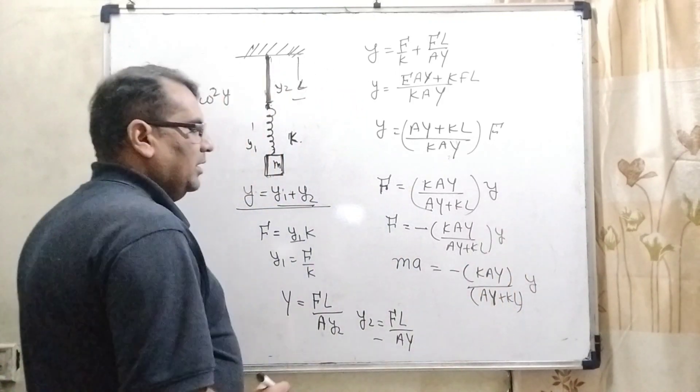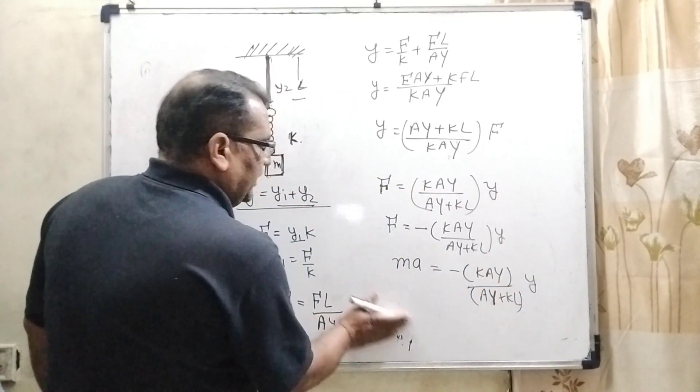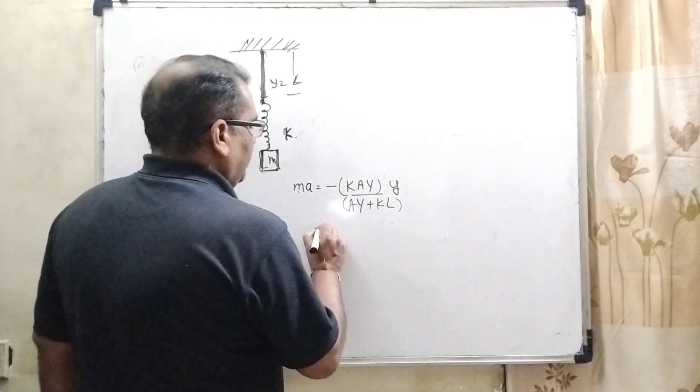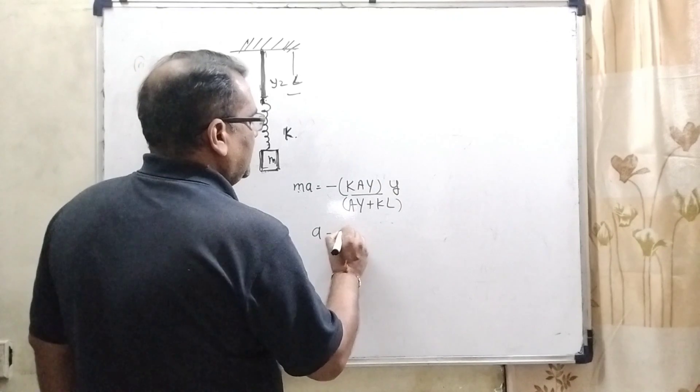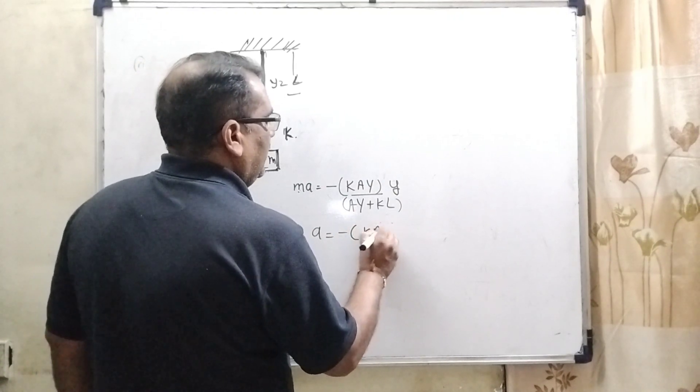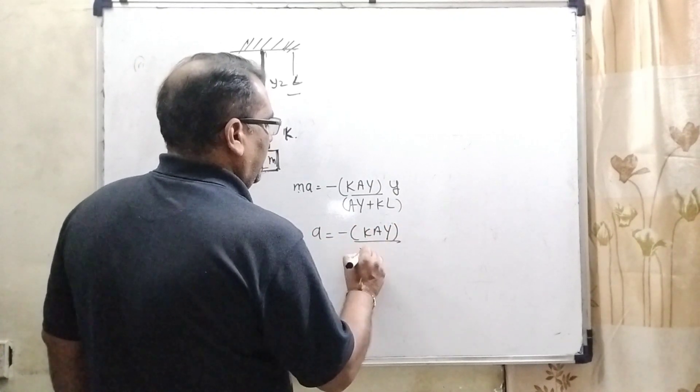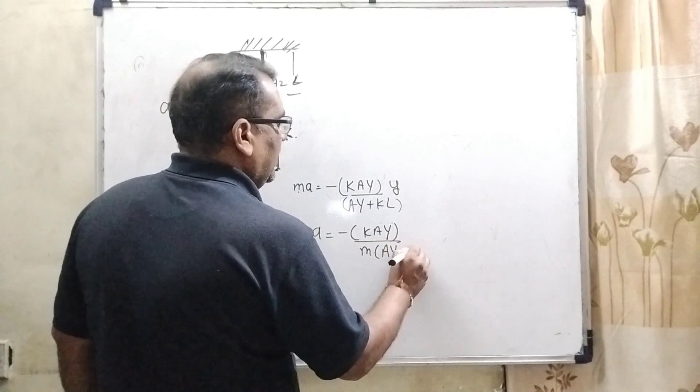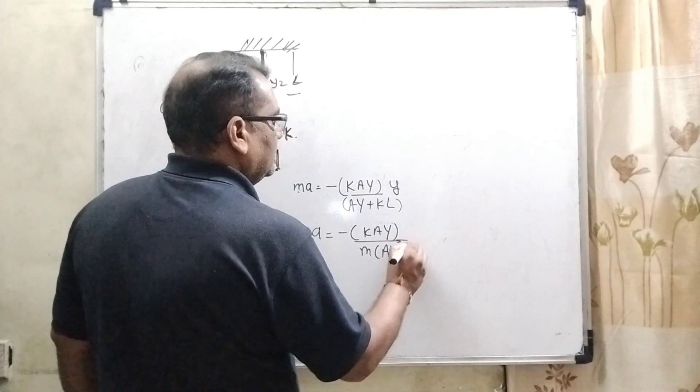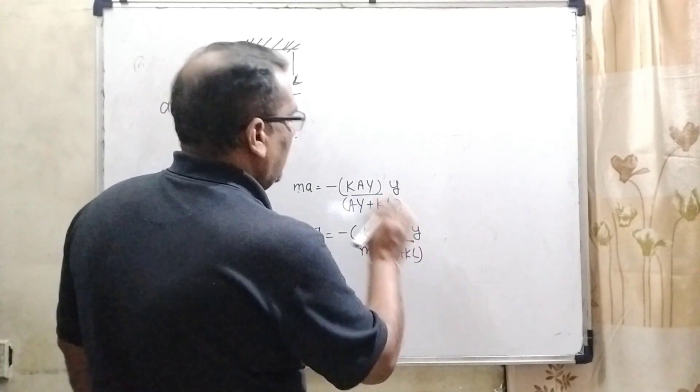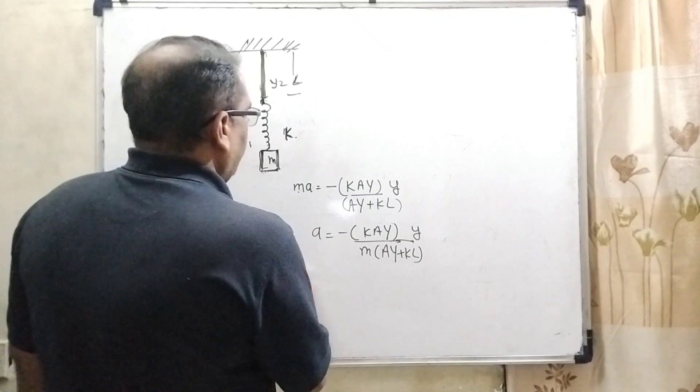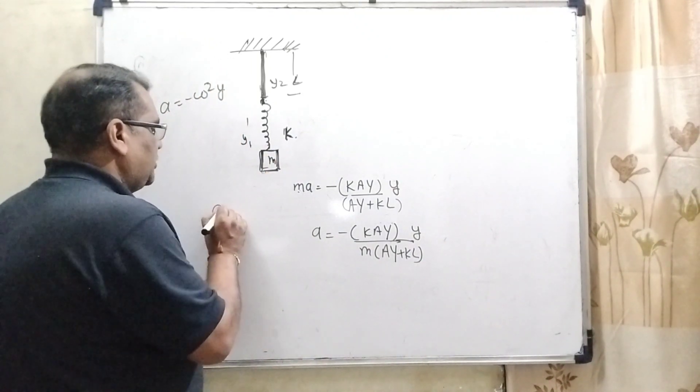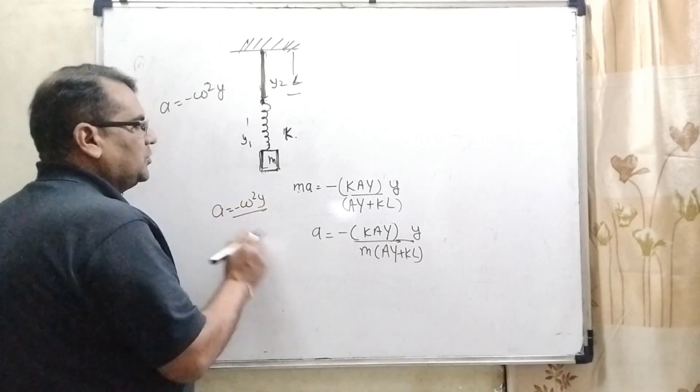Now acceleration can be written as, transposing m, minus kAY upon m times (AY plus kL) into y. But we know that when the whole system is oscillating, acceleration should be minus omega square y.